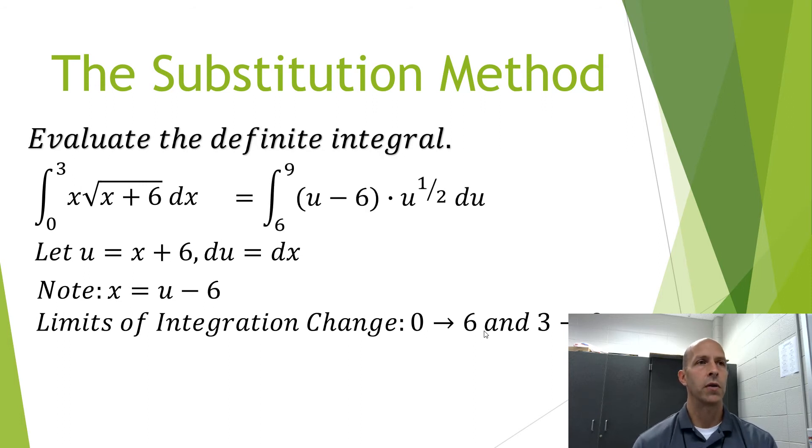That means our original integral can be rewritten as the integral of u minus 6 times u to the one-half, du from 6 to 9. We can then distribute the u to the one-half, which will give us the following integral.